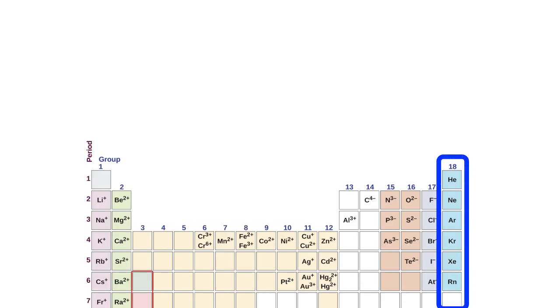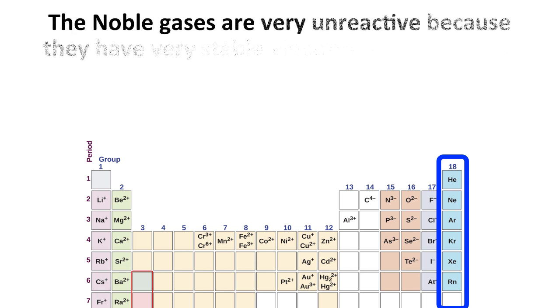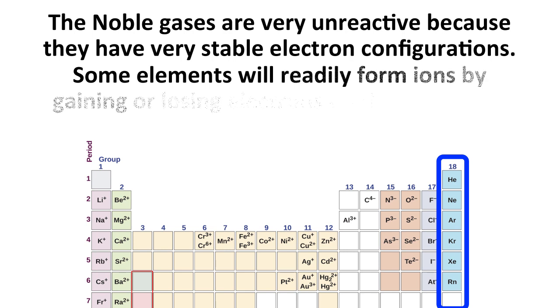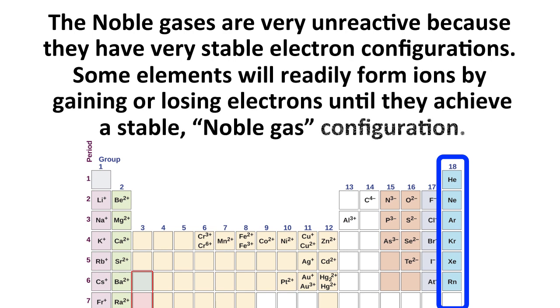The noble gases are very unreactive. That's why they're called noble gases. The reason they're very unreactive is they have very stable electron configurations. So they don't change their electron configuration, but other elements do. They readily form ions by gaining or losing electrons until they end up with a stable noble gas configuration. The reason that the halogens, fluorine, chlorine, etc., gain one electron is because if they gain one electron, they have the same number of electrons as the noble gas that's to the right of it, and now they're stable. The oxygen column gains two electrons to achieve a noble gas arrangement. The alkaline metals lose one electron to do this. The alkaline earth metals lose two electrons.